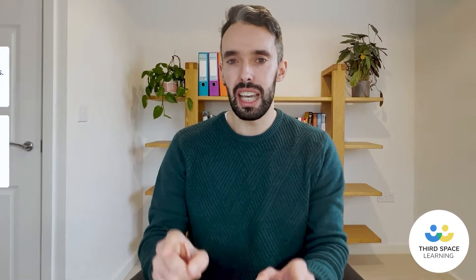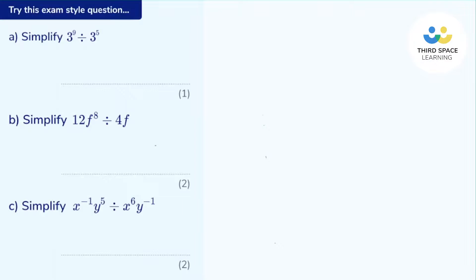Let's look at this in an exam-style situation. Part A says: simplify three to the power of nine divided by three to the power of five. The laws of indices tell me that when I'm dividing terms with the same base, I can just subtract those powers. So this is three to the power of nine subtract five, which is just three to the power of four.